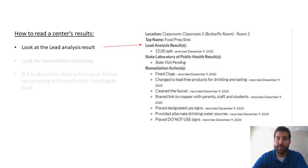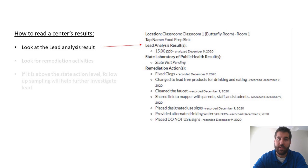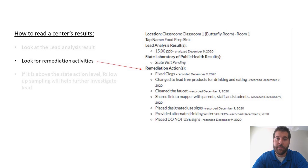There are a few things you'll want to look at. The first is the lead analysis result, which is a measure of the water the center first collected when they participated in this program. The child care center will be able to report remediation actions for all taps, even those that test below the state action level. If a sample is below the state action level, the center does not have to take any remediation action. We do, however, recommend that they perform the remediation practice of flushing their water regularly. Flushing will remove water that has been sitting in pipes for a long time, which can collect and is likely the cause of their initially high result.